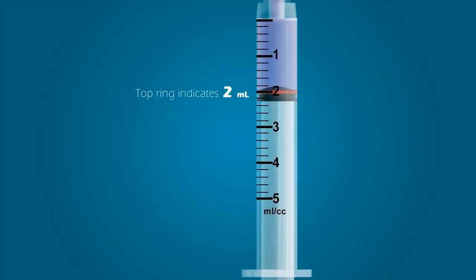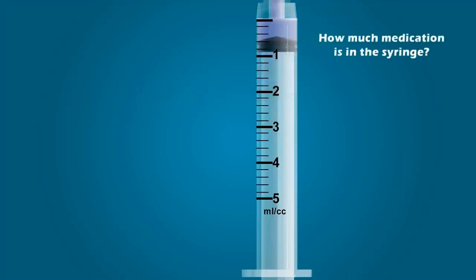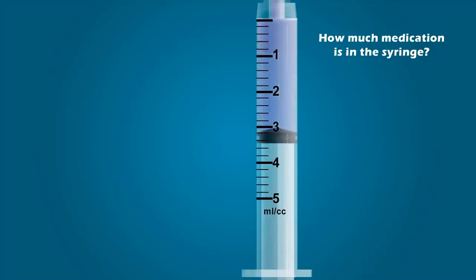You try the next one. How much medication is in this syringe? If you stated 0.6 milliliters, you are correct. One more — how much medication is in this syringe? If you stated 3.2 milliliters, you are correct. Great job.